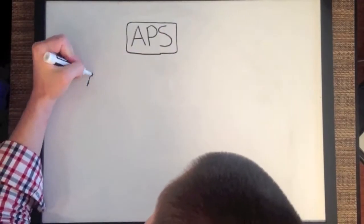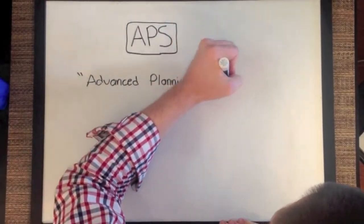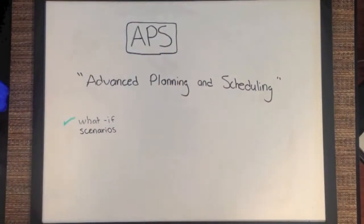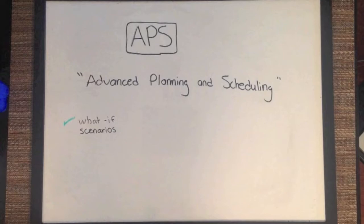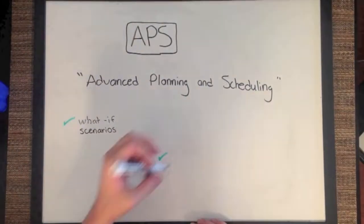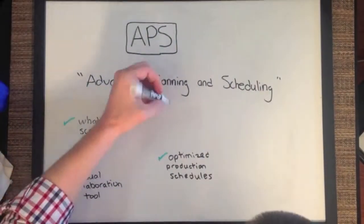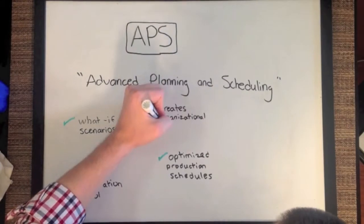Finally, APS stands for Advanced Planning and Scheduling. It uses powerful what-if scenarios and considers material requirements, available resources, capabilities, constraints, due dates, desired metrics, and more to help plants optimize production schedules. This makes APS a visual collaboration tool that creates organizational alignment.